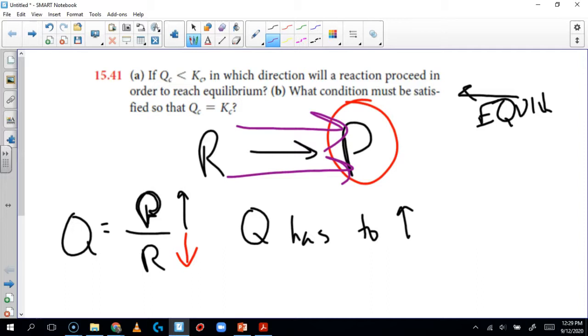Okay. So part A says the reaction will proceed - you could say to the right, you could say toward the products, whichever way - but in order to reach equilibrium, that's what has to happen. So that is the answers to both of those questions. Have a great day.